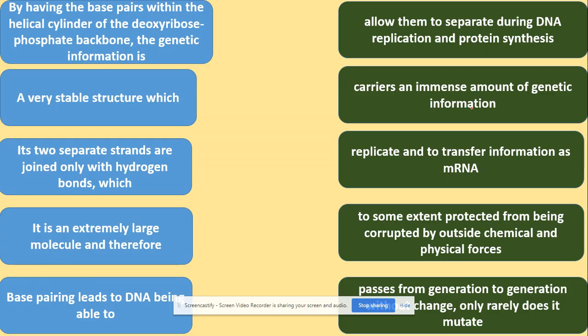In terms of the 'so what' approach, we need to look at the function and structure of DNA. By having the bases within the helical cylinder of the deoxyribose phosphate backbone, the genetic information is to some extent protected from being corrupted by outside chemical and physical forces. It's stable because it has many weak hydrogen bonds, so it passes information from generation to generation and only rarely mutates.